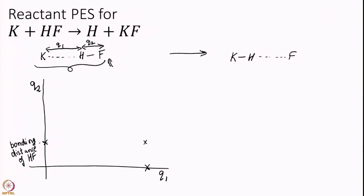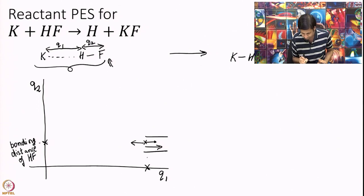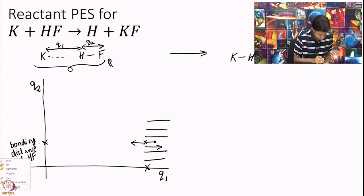I want to understand how the energy surface looks around this reactant point. If I fix Q2 and move Q1 — meaning I fix the HF bond distance and move K further away — the energy is not going to change much. K is already very far away, so taking it further away means it is still not interacting. You get an energy surface that is almost flat, so the contour lines along the Q1 direction will look almost flat.